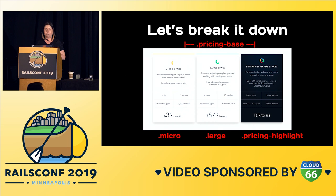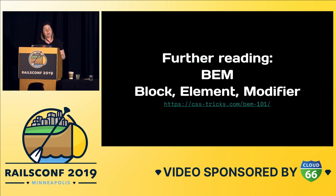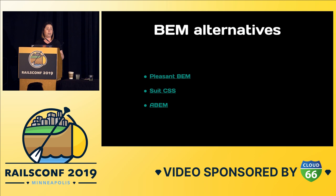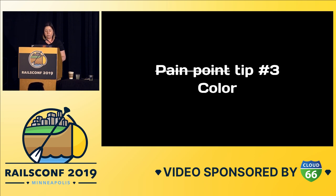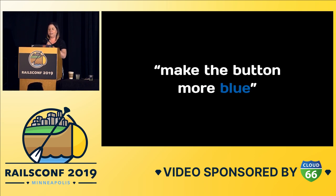For further reading on naming, there's a standard called BEM — Block Element Modifier — that a lot of people like to use. There are also other alternatives like PLUS BEM, SUPCSS, and ABEM. It all comes down to preference — if you work on a team, it merits evaluating the options and discussing what best suits your needs. The next thing I want to talk about is color — more of a tip than a pain point. It took me a long time into my career to figure out what was happening with color in CSS.